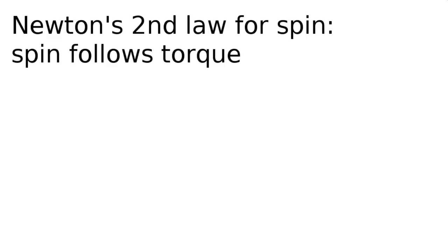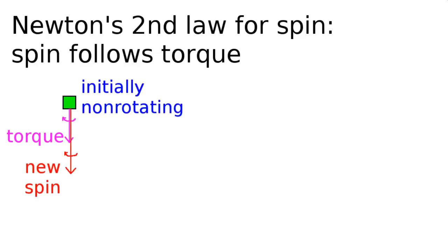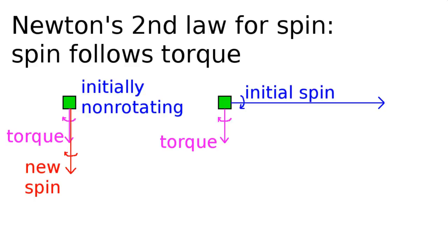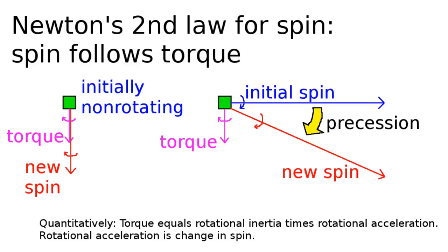The same principle applies to spin, and we have the rule: spin follows torque. If I have an object that is initially not rotating and I apply a torque, then after a while, the object will be spinning in the same direction as the applied torque. But if I have an object that's already spinning and I apply a torque, then it does not instantly start spinning in that direction. Instead, its spin gradually changes to align with the applied torque, and that's what we call precession. So you can remember everything you need to know about precession just by remembering that it's the analog of Newton's second law applied to rotating objects.